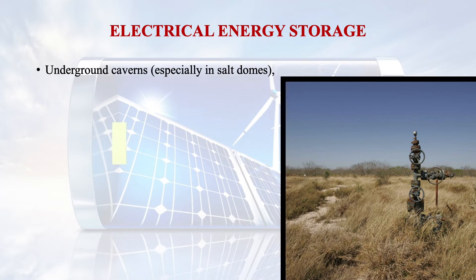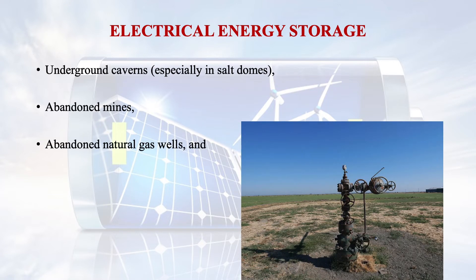Another way of storing electrical energy is compressed air energy storage. In this system, an underground pump system stores air instead of water and can be used later for generating electricity using a modified gas turbine as per the requirement. Examples of such systems include underground caverns especially in salt domes, abandoned mines, abandoned natural gas wells, and empty aquifers. The net energy yield in such storage is moderate to high. However, from a sustainability perspective, this system is not completely pollution-free.